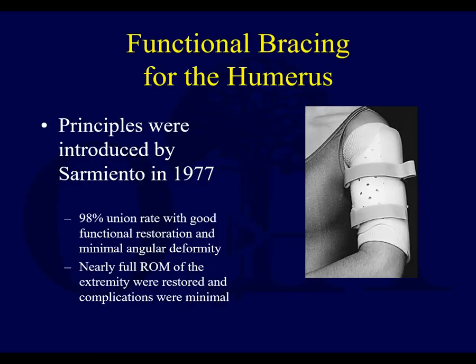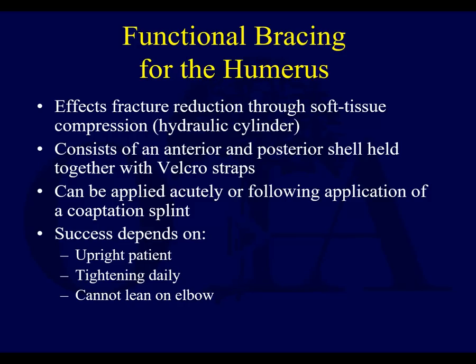Augusta Sarmiento helped popularize functional bracing. This is a nice example of a functional brace shown here. You can see this allows free shoulder motion and free elbow motion. In his reports, there was a very high rate of union with good functional restoration and minimal complications.